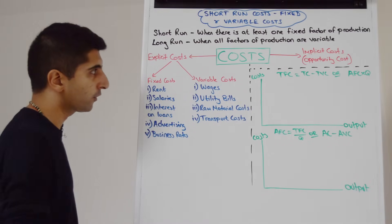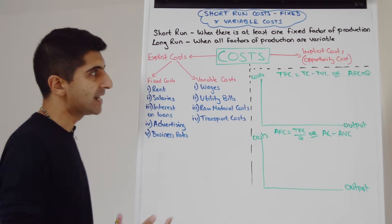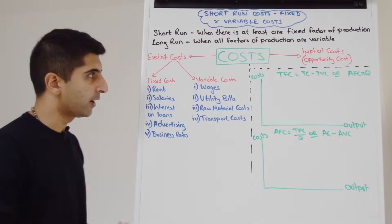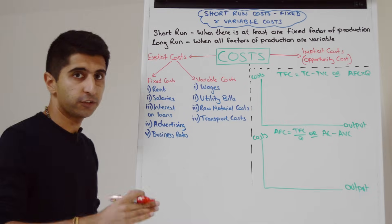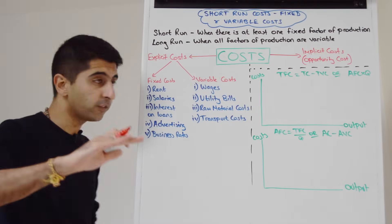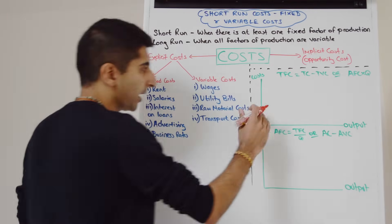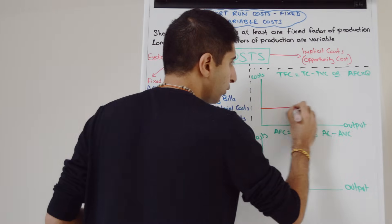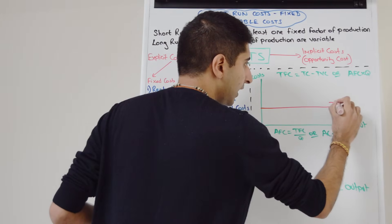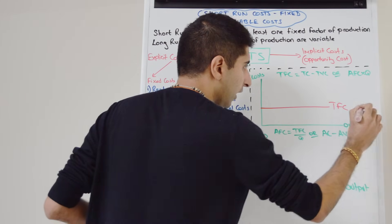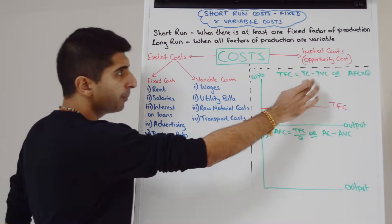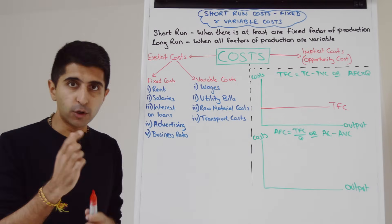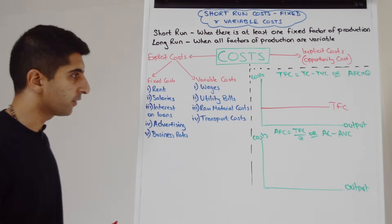Let's start by looking at total fixed costs. We've just said that fixed costs are costs that do not vary with output, so total fixed cost is just going to be constant — at a constant figure over a given range of output. So total fixed cost is just going to look like a flat horizontal line. There are equations at the top showing how you can work out total fixed cost.